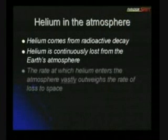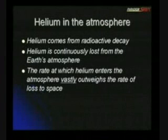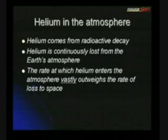Helium is a small molecule — two protons, two neutrons, and a couple of electrons. But helium is quite a small molecule. The main source, as far as we can tell, is from radioactive decay, and we're going to come back to helium and radioactive decay towards the end of this talk. Helium, of course, being a light molecule, is constantly lost from the Earth's atmosphere into space — it's not very difficult for it to leave. People have looked at the helium balance in the atmosphere and they've discovered that the rate at which helium enters the atmosphere vastly outweighs the rate that it's lost into space, so an awful lot more helium is going into the atmosphere than is currently being lost.